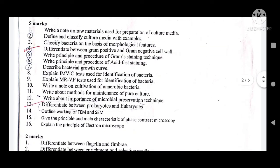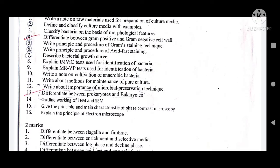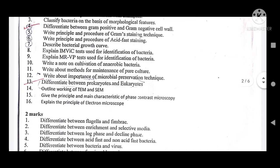For five-mark questions: first, write a note on raw materials used for preparation of culture media. Second, define and classify culture media. These five-mark questions are basically related to the ten-mark questions. Third, classify bacteria on the basis of morphological features. Fourth, the difference between gram-positive and gram-negative. Fifth, procedure and principle of gram staining technique. Sixth, principle and procedure of acid-fast staining — very important.